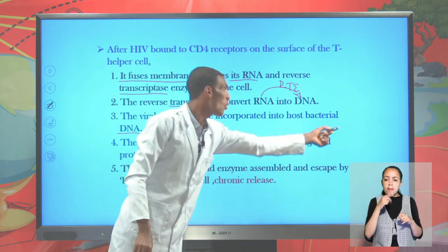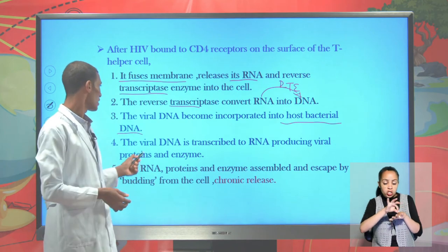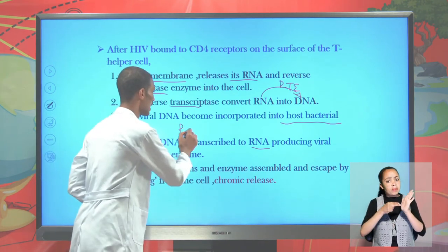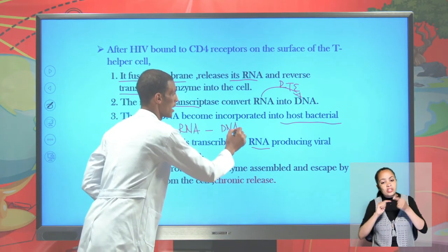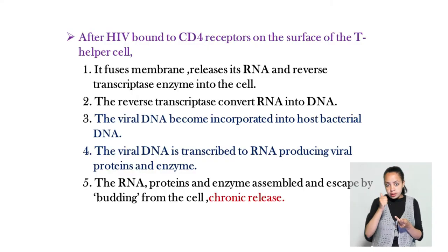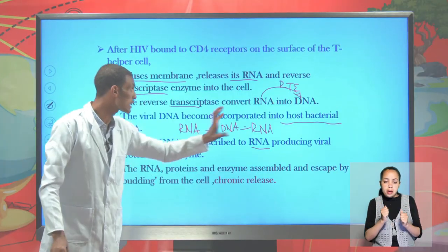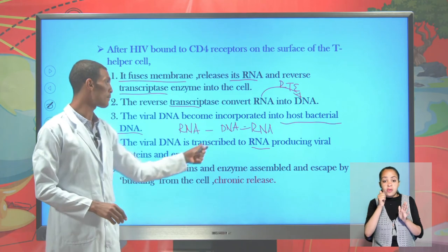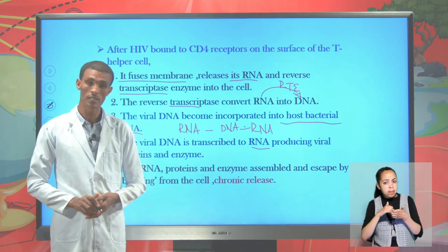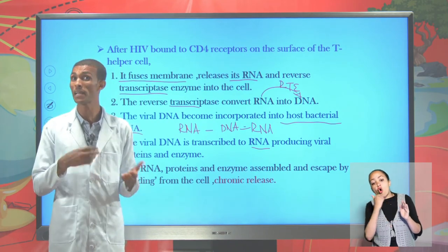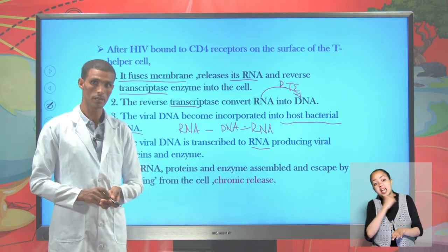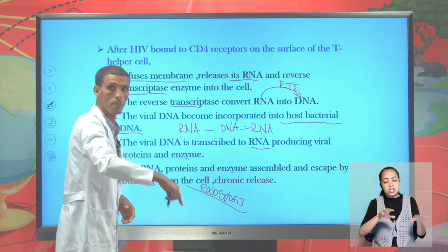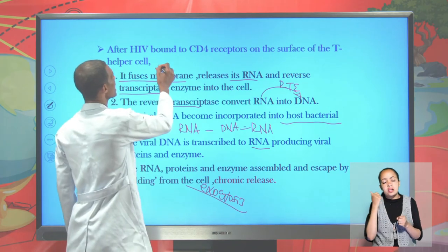As we are speaking about bacteriophage, the host bacterial genome is involved. The viral DNA becomes transcribed into RNA, producing viral protein and enzyme together. The viral RNA, viral protein, and viral enzyme become assembled and escape from the host cell — either by killing or by chronic release — to infect another cell. This release is by exocytosis means, forming buds and releasing out of the host cell to infect another one and enter into that host cell by means of endocytosis.